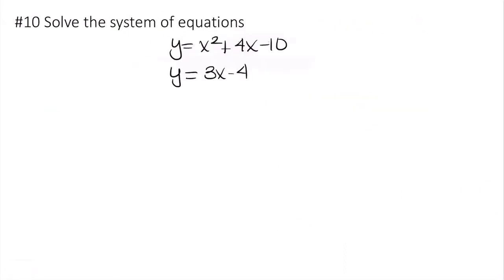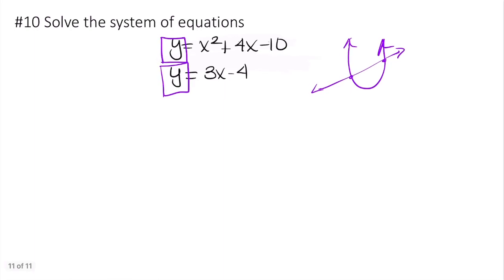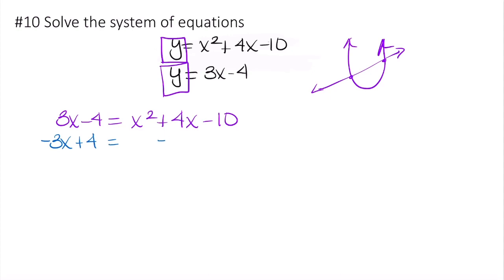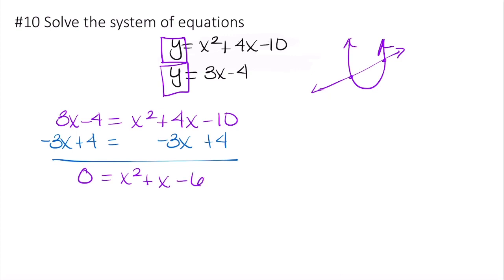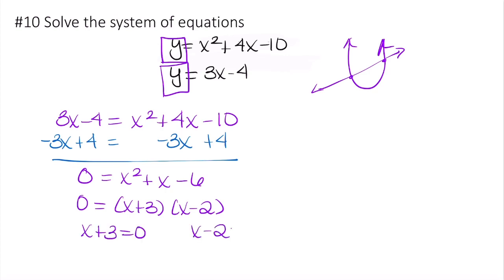Now let's solve this non-linear system of equations. Both equations are in y-equals form, so you can graph them and find intersections. Algebraically, set them equal: 3x minus 4 equals x squared plus 4x minus 10. Rearranging to standard form by subtracting 3x and adding 4 gives x squared plus x minus 6 equals 0. This factors into x plus 3 times x minus 2, giving x equals negative 3 and x equals 2.